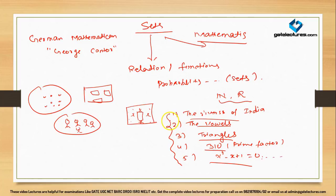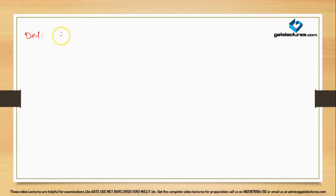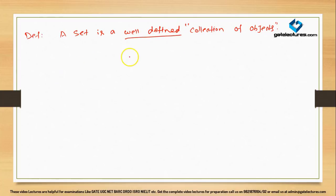A set can be defined as a well-defined collection of objects. So the definition: a set is a well-defined collection of objects.